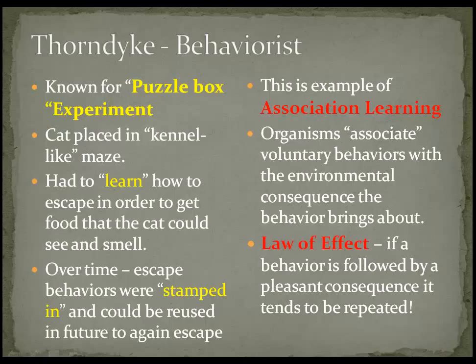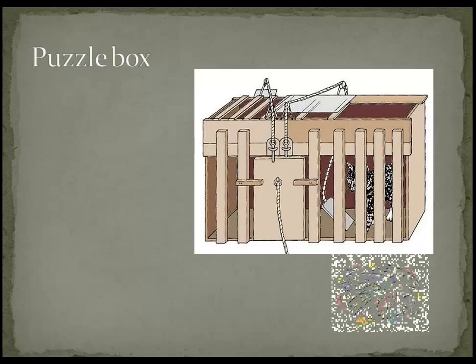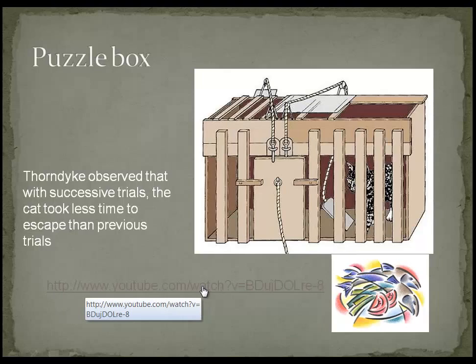This is often referred to as the law of effect. Thorndike said that if a behavior is followed by a pleasant consequence, it tends to be repeated. So any behavior that allowed the cat to get closer to the food was likely to be repeated in similar circumstances. Thorndike observed over several trials that the cat took less time to escape than in previous trials, leading him to believe the cat was learning to associate behaviors with escape. Let's take a look at a short video on this.